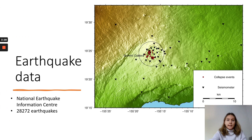To study earthquake statistics, a circular area with a radius of 4 km around the caldera is used, as shown on the map here. The location of collapse events is shown for reference as the red dots. Using the National Earthquake Information Centre catalogue, a total of over 28,000 earthquakes which occurred between the 17th of May and the 4th of August were used in the analysis. The timings of earthquakes were normalized between T0 and T1, with collapses occurring at T1.